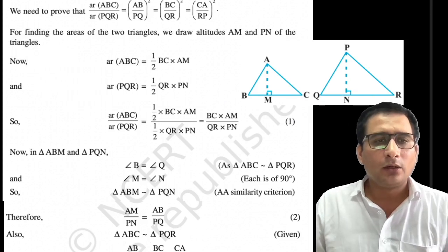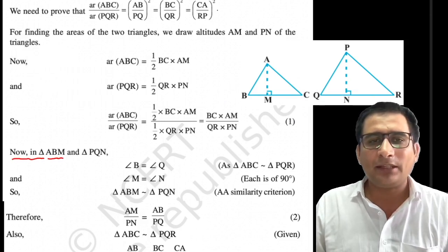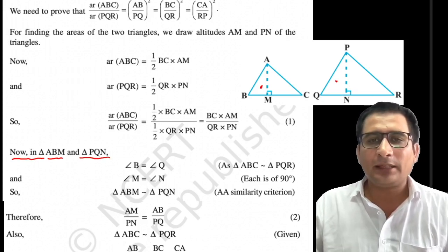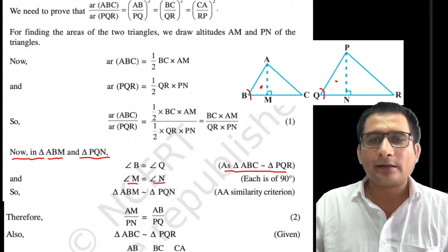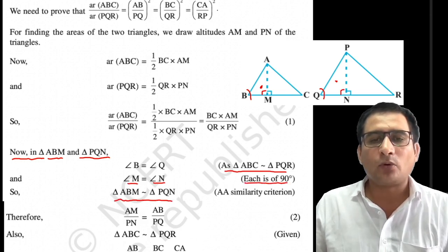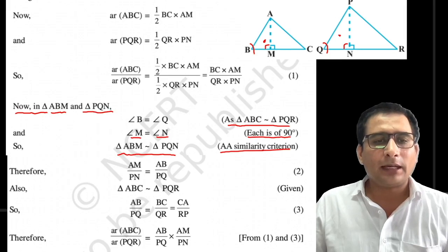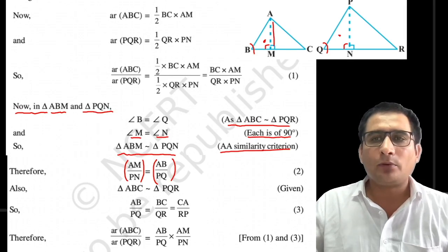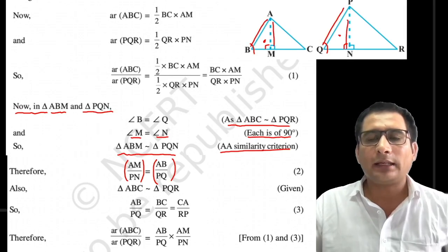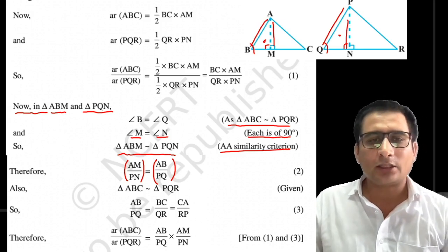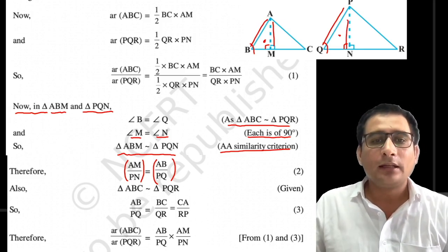Ab iske liye kya karna hoga? Ek triangle ABM liya humne aur ek triangle PQN liya. Isme angle B, angle Q ke equal kyun hai? Kyunki triangles similar the. Angle M, angle N ke equal kyun hai? Kyunki yeh angle 90 degrees hai. Isse kya hoga — in dono triangles ko similar prove kar sakte hain, AA similarity criteria se. Iske baad agar yeh dono similar hain toh AM upon PN, AB upon PQ ke equal ho jayega — corresponding sides of similar triangles.